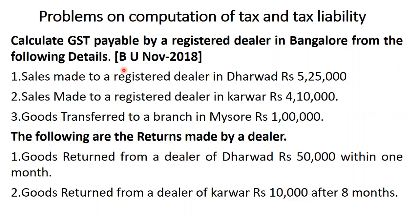The taxable amount is clearly given but the rate is not given. In this problem we have been asked to calculate the taxable supply, and on that we are going to calculate the tax liability. Sales made to a registered dealer in Karwar — Karwar is also located within the state, so the full amount of 5,25,000 is recorded. Sales to Karwar of 4,10,000 we take as it is. Goods transferred to a branch in Mysore: 1,00,000 — the same amount will also be recorded as taxable supply. All three transactions are treated as taxable value of supply and we are going to record all of them while calculating the tax liability.